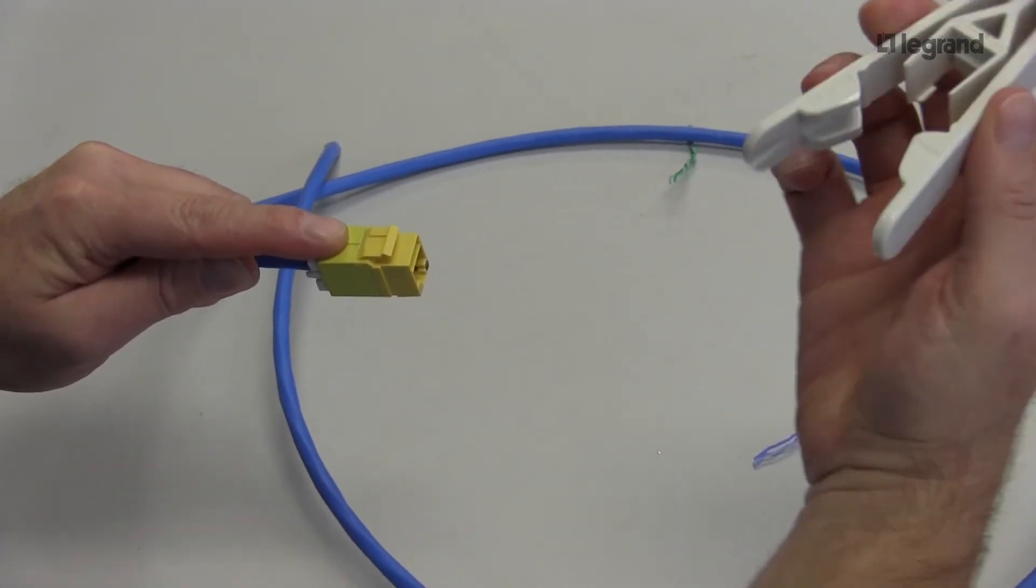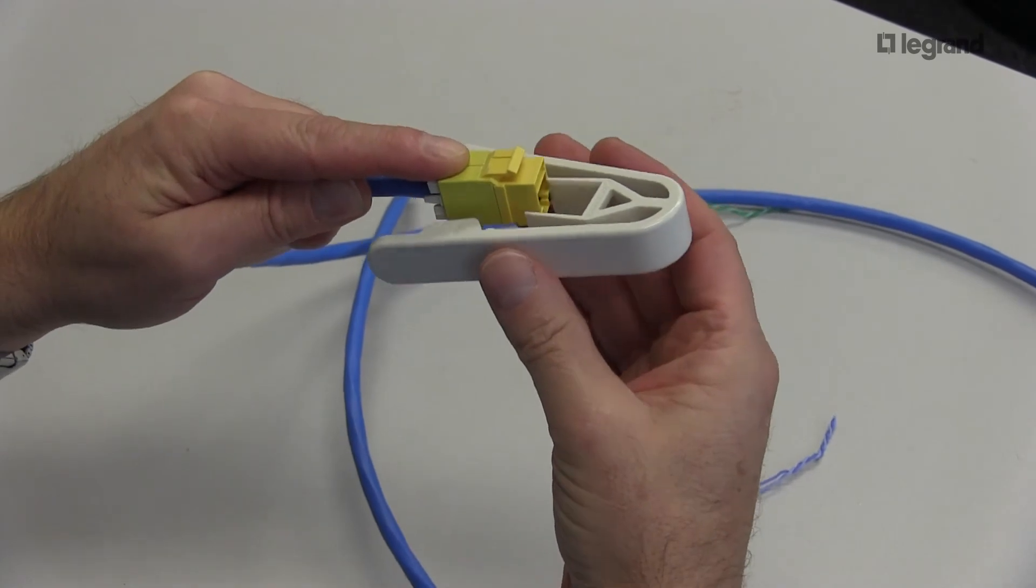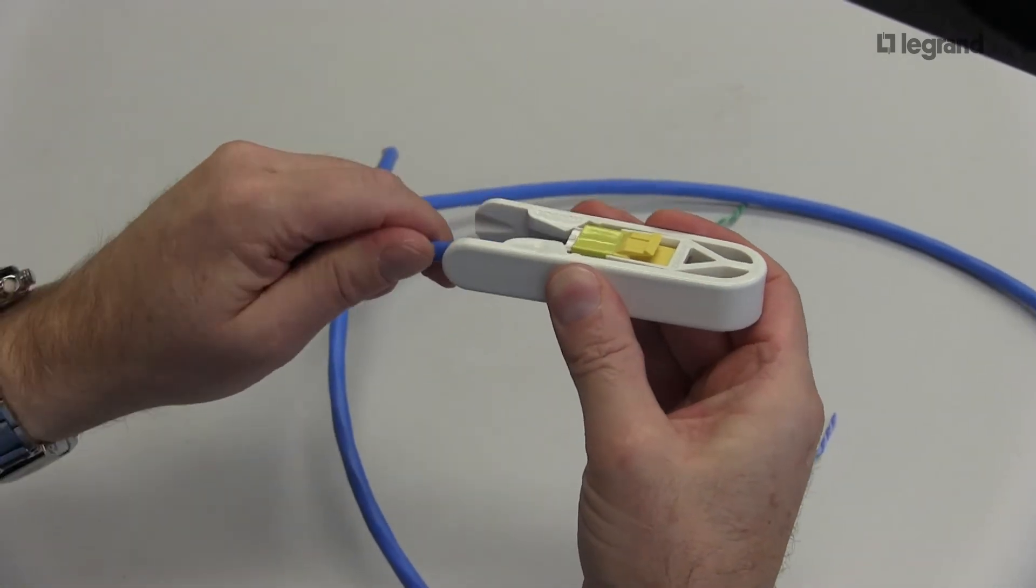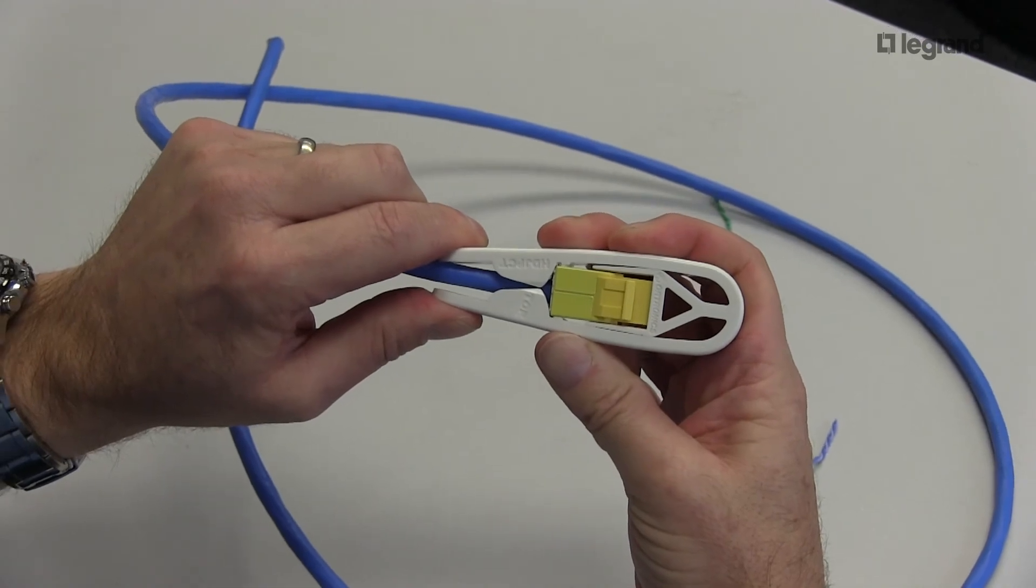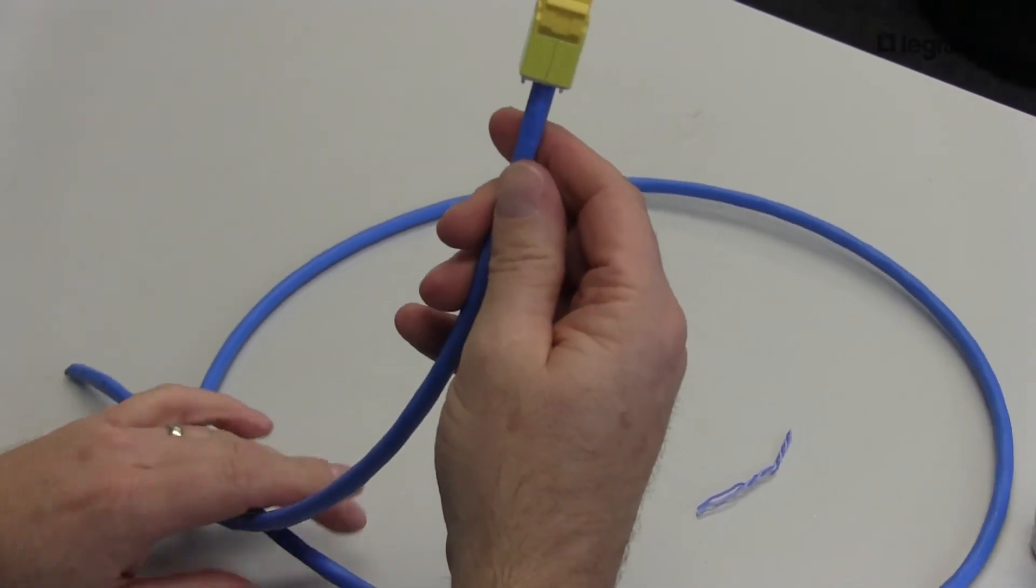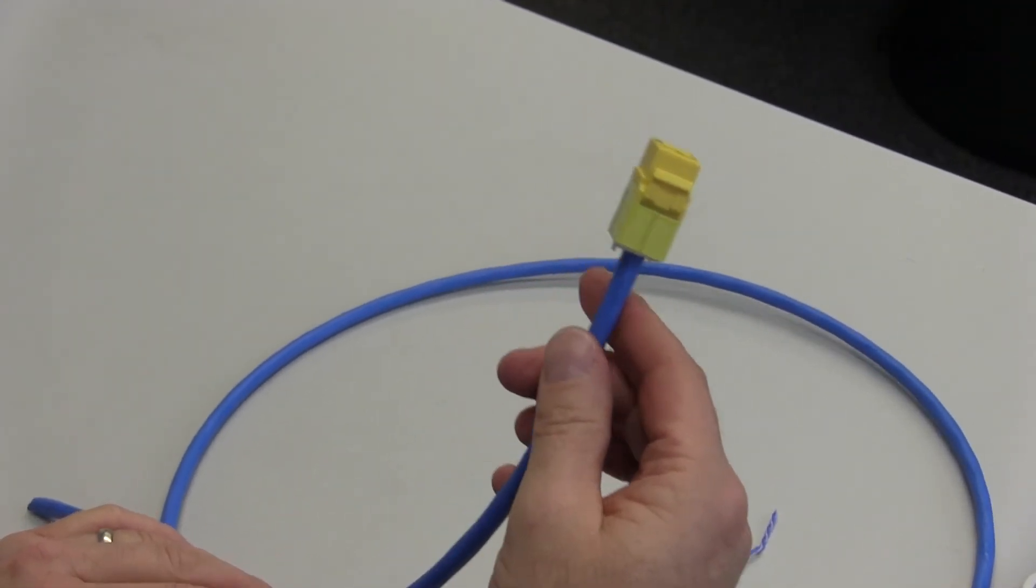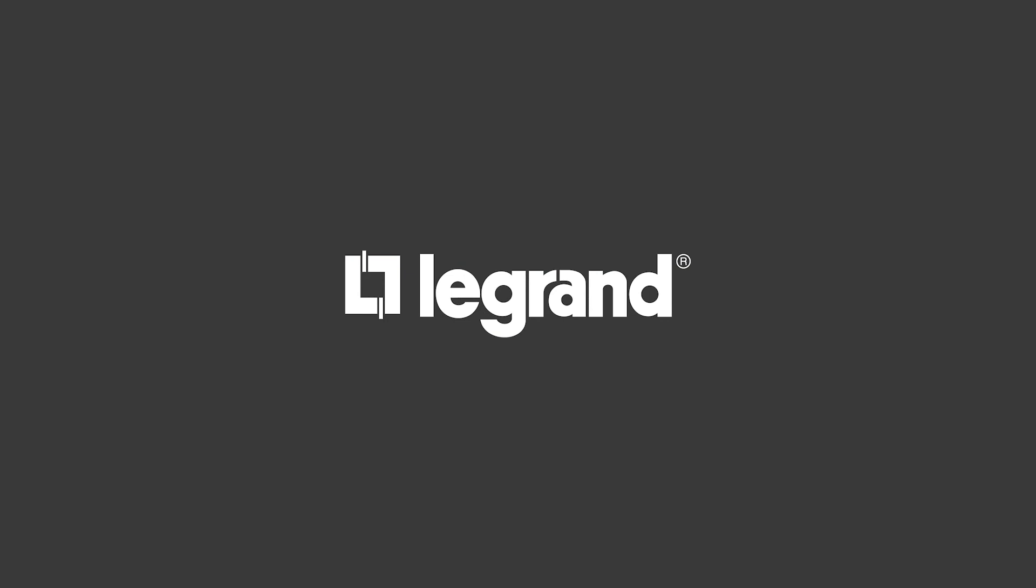And then when you take your compression tool, it also says top. Align your KT2 into your compression tool and squeeze the ends until you hear an audible click. And that is the completion of your KT2 termination.